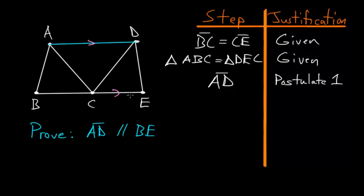So to prove this, what we first want to do is make an assumption and show that this leads to some type of logical contradiction. So let's assume that the line AD is not parallel to the line BE.